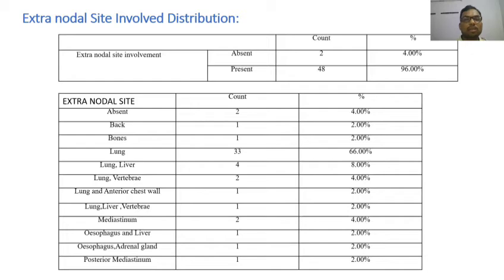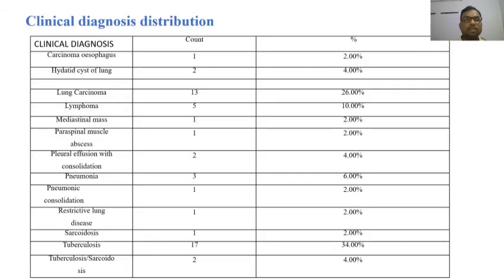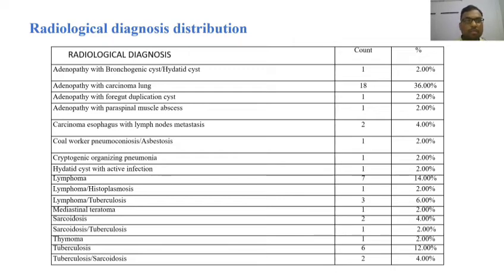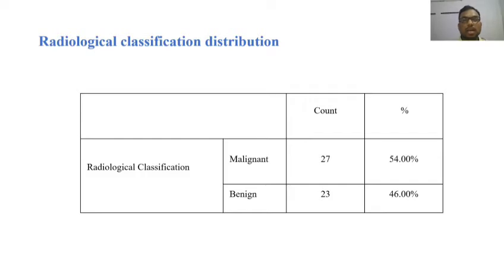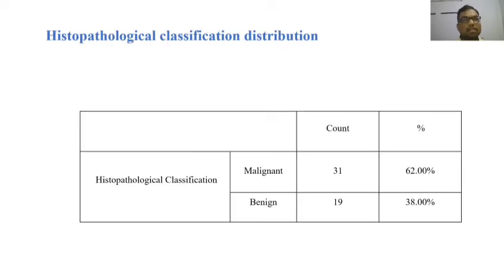The most common extranodal site of involvement is the lung, seen in 66% of patients. Clinically, 34% of patients had a diagnosis of tuberculosis, followed by lung carcinoma in 26%. Radiologically, 36% were classified as lymphadenopathy with carcinoma of the lung, followed by lymphoma at 14%. On histopathological diagnosis, 16% had non-small cell carcinoma and 16% had tuberculosis. Radiologically, malignant lesions were seen in 54% and benign lesions in 46%; histopathologically, malignant in 62% and benign in 38% of patients.